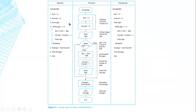To express this using a flowchart, we start with an ellipse labeled 'average age.' Then we have a rectangle: sum equals zero. Another rectangle: counter equals zero. Then we use a parallelogram to enter the age.